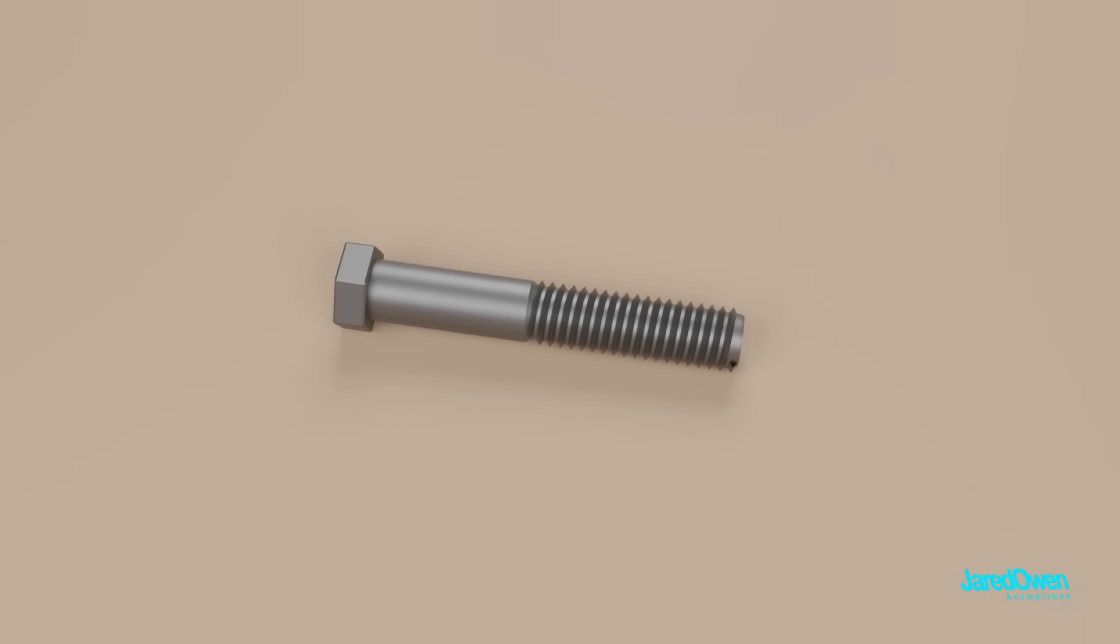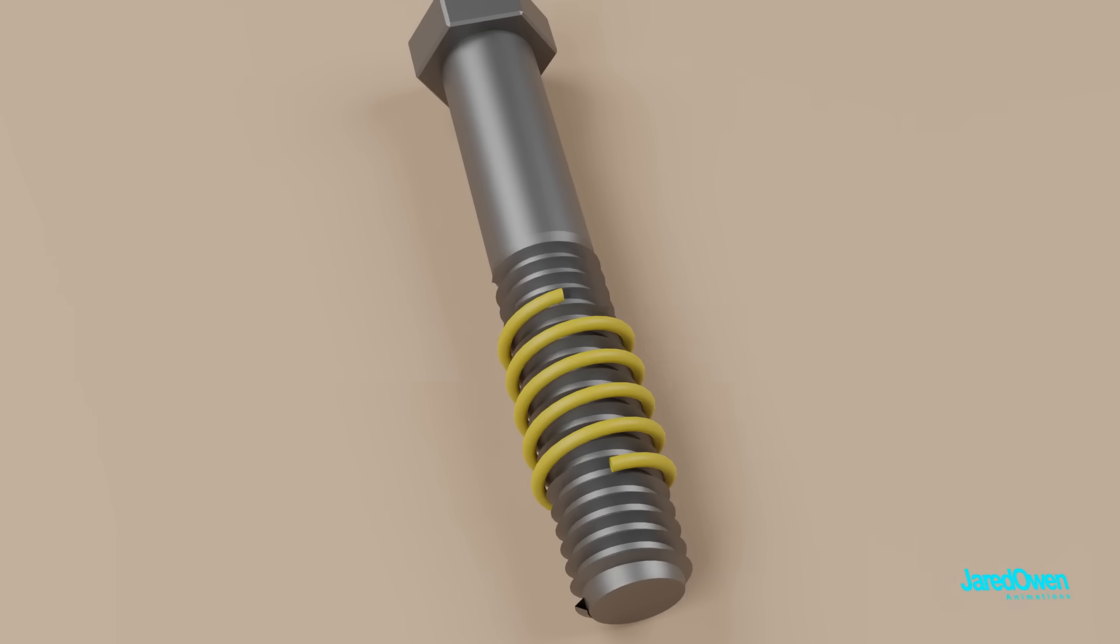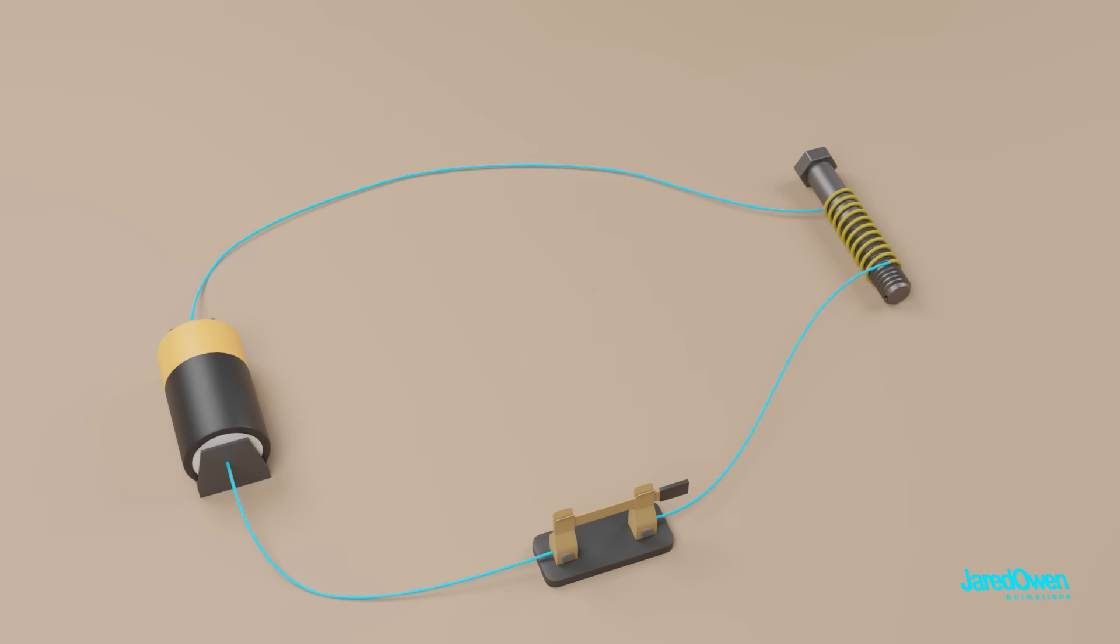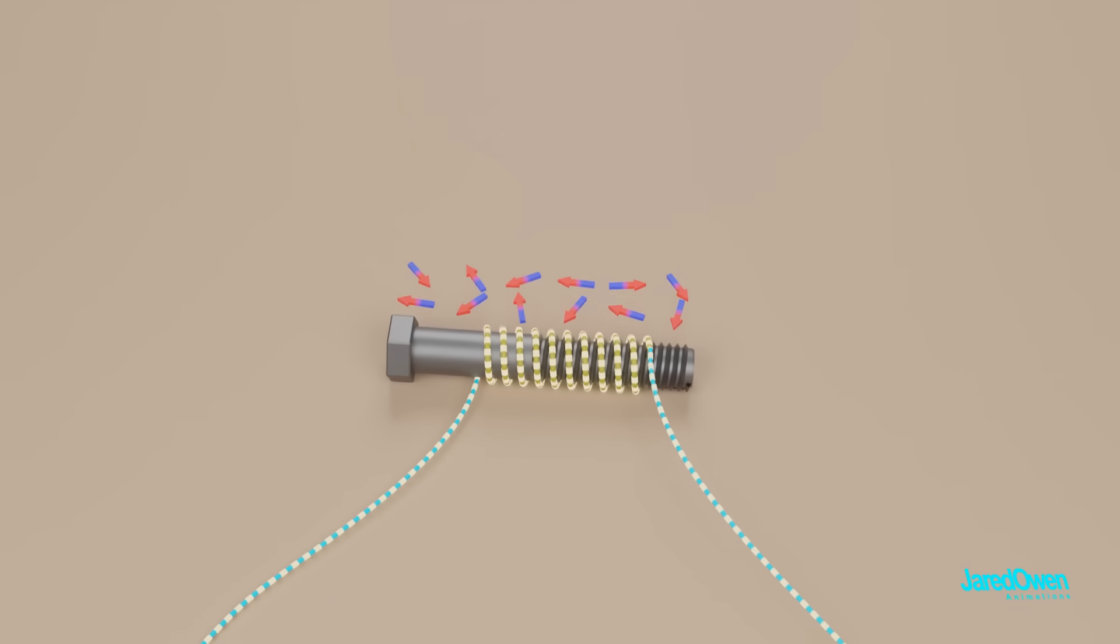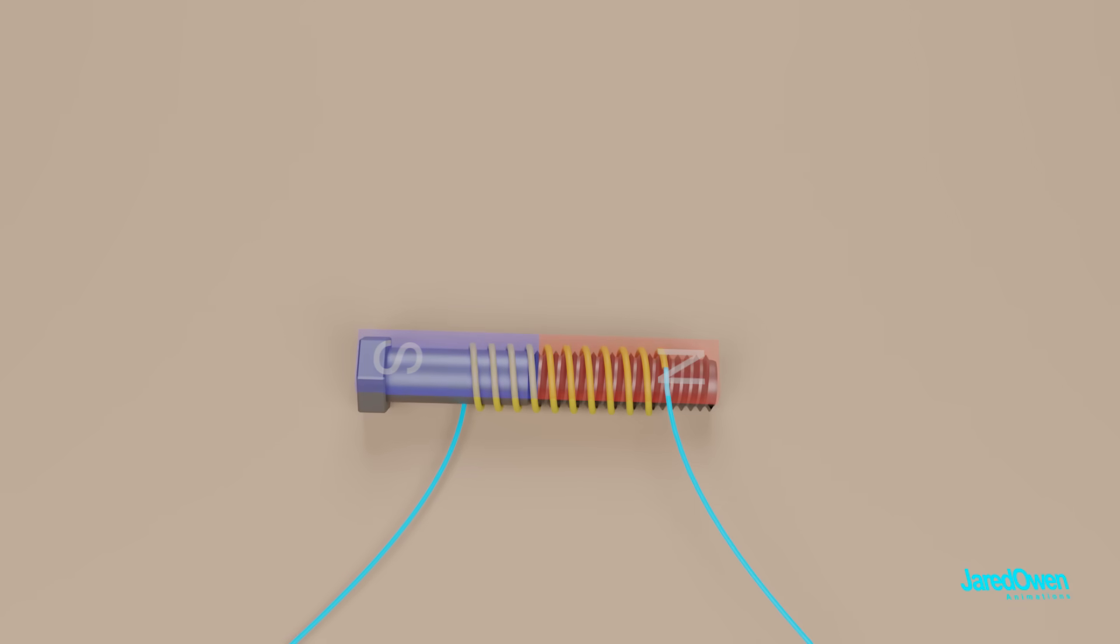Here's a metal bolt, which is not a magnet. It's made up of magnetic domains, but they are pointing in random directions. Now let's take a wire, wrap it around several times, and then create a circuit. The current through the wires forces the magnetic domains to line up. That means we've just made a magnet, or more specifically, an electromagnet.